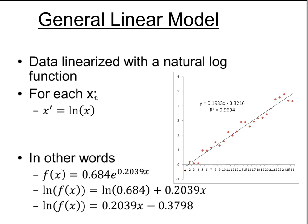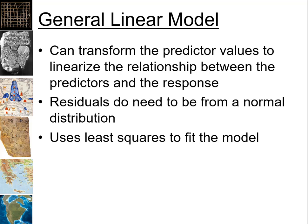Here, just another way of looking at it. We've linearized our data using a log function. Taken that function, converted it down to a linear model. So, this is where we're transforming the predictor values. And now we have a linear relationship. One of the things about this, residuals do need to be from a normal distribution after you've transformed them. Once you transform them, then they need to be normal. And then it uses least squares to fit the model because it's linear regression.